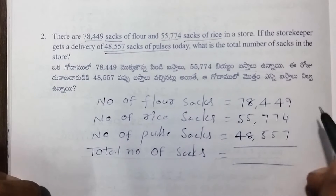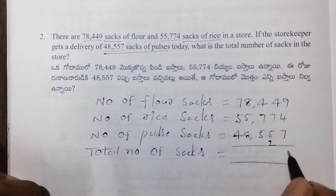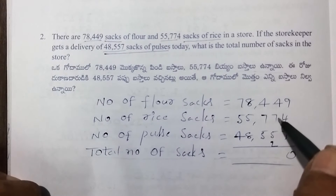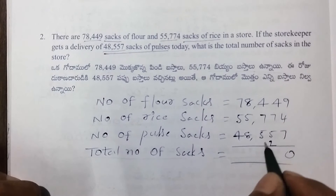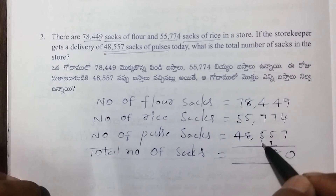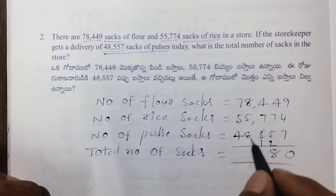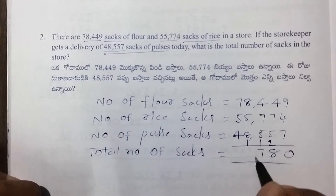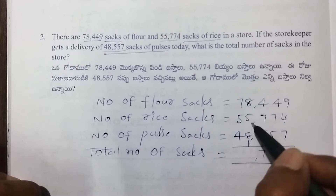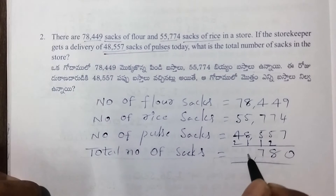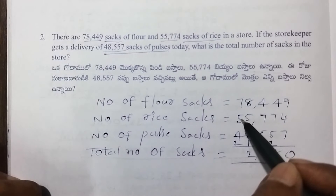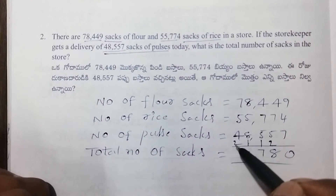9 plus 7 is 16. Next, 5 plus 2 is 7, 7 plus 7 is 14, 14 plus 4 is 18. Next, 5 plus 1 is 6, 6 plus 4 is 10, 10 plus 7 is 17. Next, 2, 8, 6. Next, 7 plus 5 is 12, 12 plus 4 is 16, 17, 18.